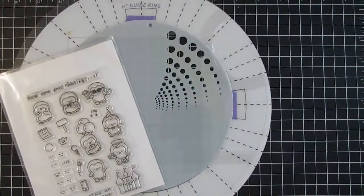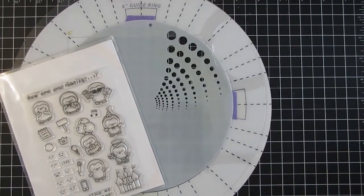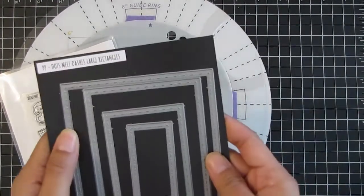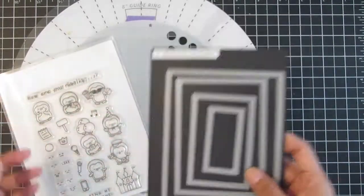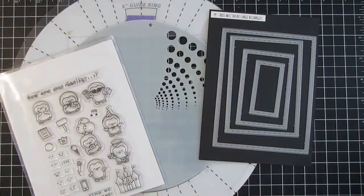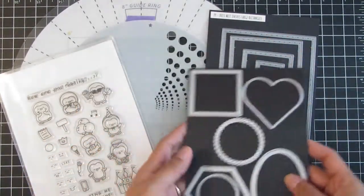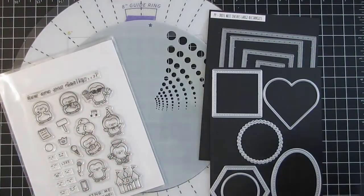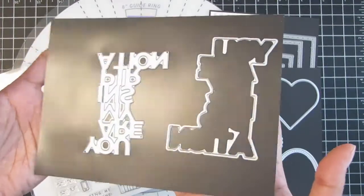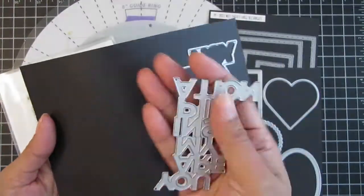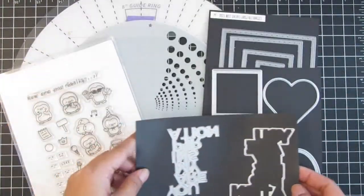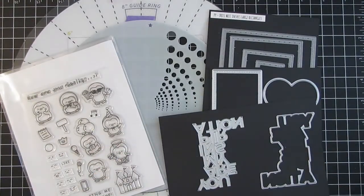The stamp set I'm using is the Penguin Agenda along with the coordinating Penguin Perfect Cuts, and then the Dots Meet Dashes large rectangles die as well as the Warmest Wishes and Heartfelt Notes coordinating dies, and then lastly the newest release, You Are My Inspiration shadow dies.